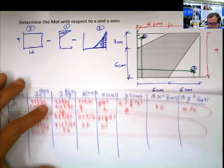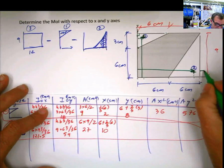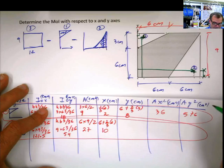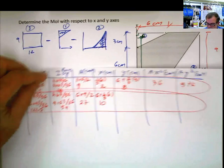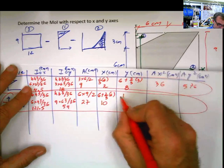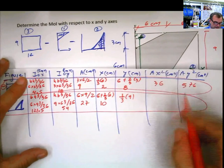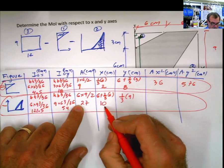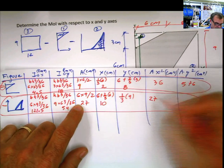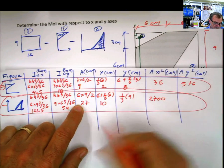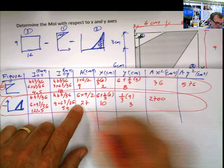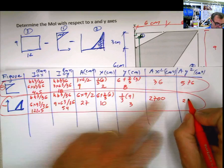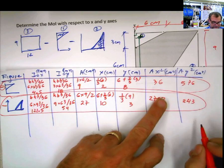Now, in y, what is the distance in y? Easy peasy again, lemon squeezy. Here, 1 third of the height, 1 third of 9. a times x squared, 27 times 10 squared is 2,700, because 10 squared is 100. And this is 9 divided by 3 is 3. 27 times 9 is 243.